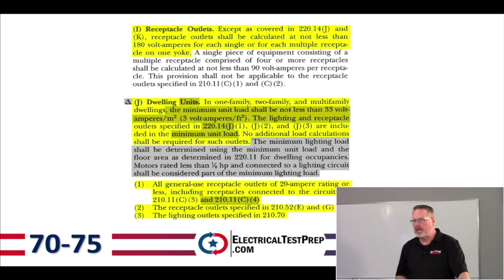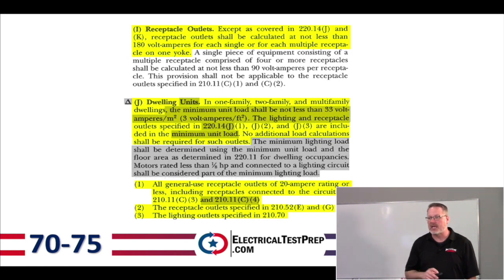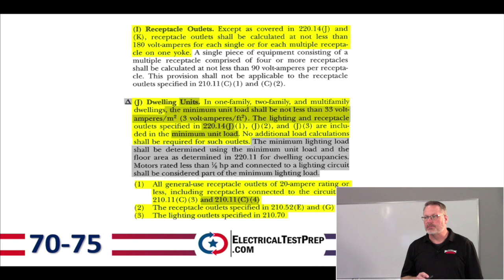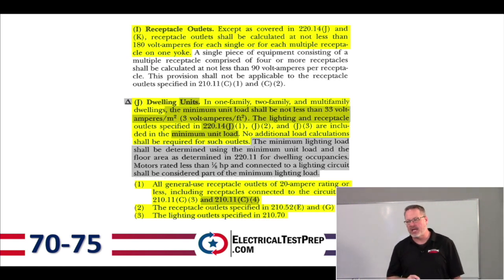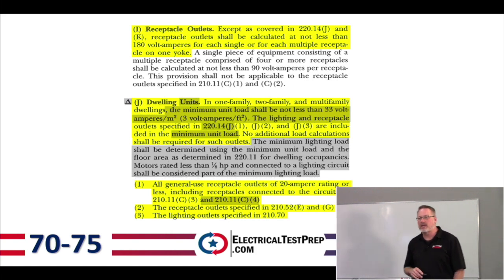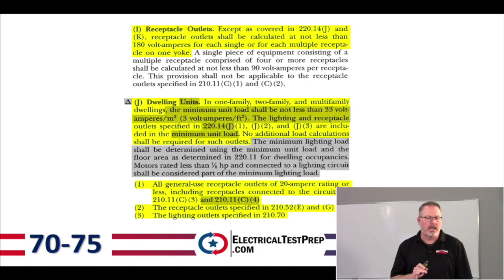Letter I under the same heading: receptacle outlets shall be calculated at not less than 180 volt-amps for each single or multiple receptacle on one yoke, except as covered in J and K. Letter J is dwelling units; letter K is banks or office buildings. So we do not apply this 180 volt-amps per outlet rule to dwelling units or banks or office buildings.